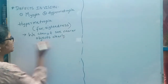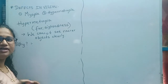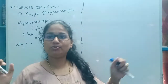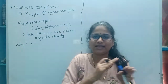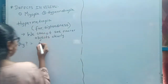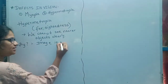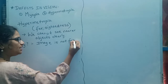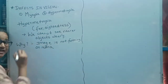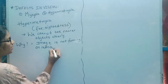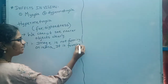So why we cannot see nearer objects clearly? In myopia, we cannot see far objects clearly because the image was not forming on the retina — it was forming before the retina. Here also, the same reason: the image is not forming on the retina. Instead, the image is forming behind the retina.